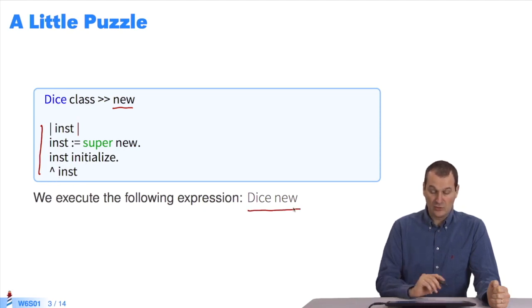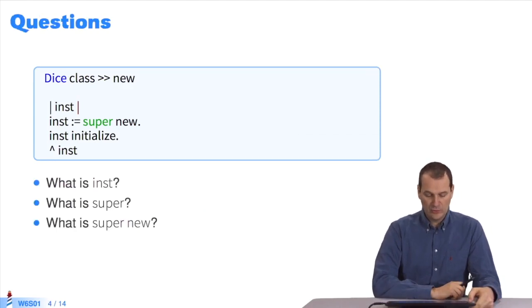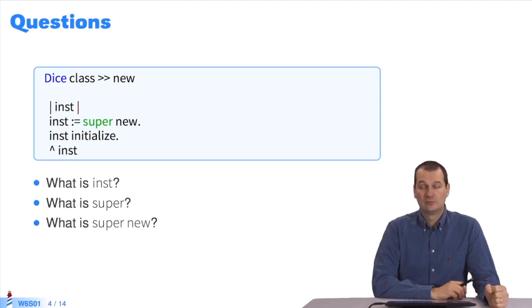Now, I execute the expression Dice new. My question for you is: In this expression, what is inst? What is super? And what is super new? I'll give you a few seconds to think it over. I'll give you a few clues.